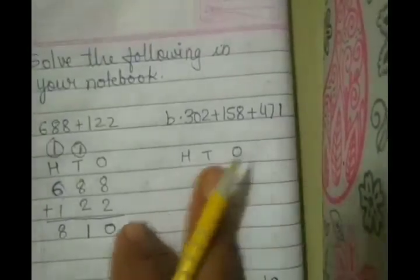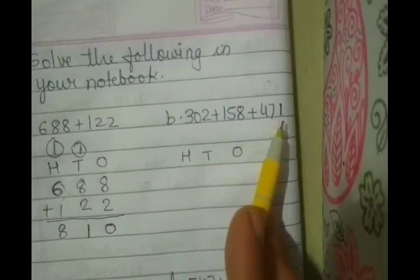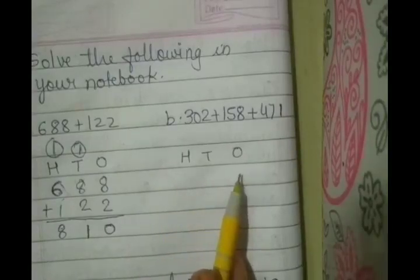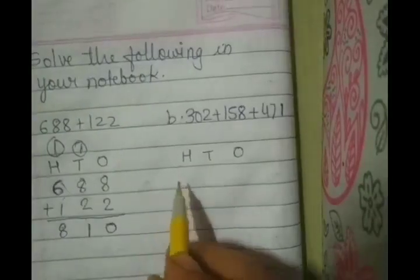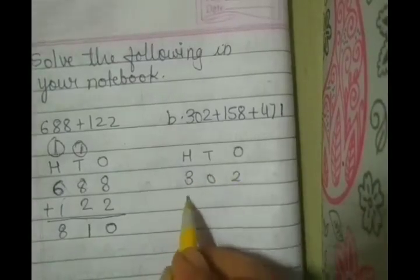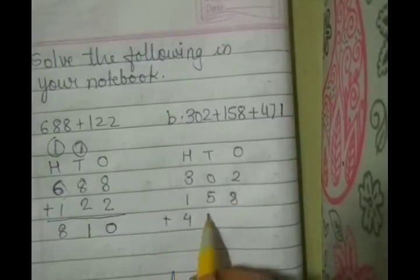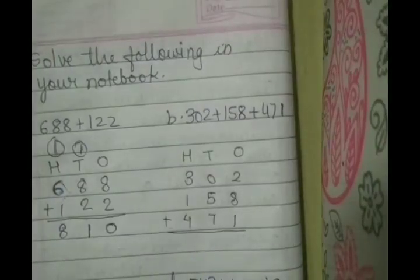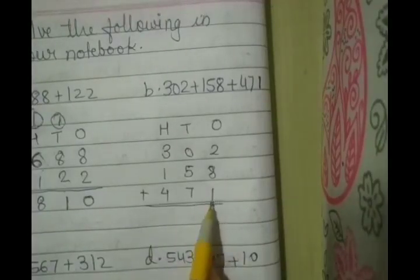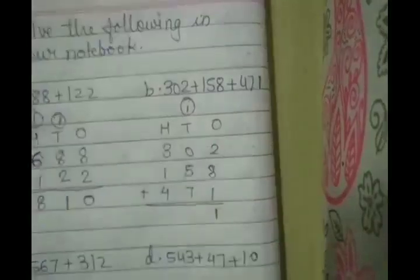Next, we are having 302 plus 158 plus 471. Make the columns hundreds, tens and ones. Now here 1 plus 8, 10 plus 1, 11. Write down 1 in ones column. Carry forward 1 towards the tens column.